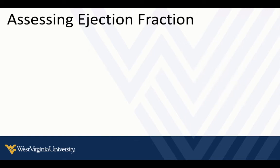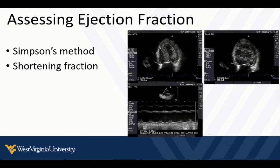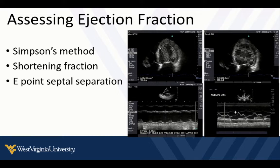Assessing ejection fraction is the common thing we want to think about. I'll briefly cover these methods so you know about them. Simpson's method is what they use most commonly in the echo lab — they get apical views and essentially calculate the area from diastole to systole to assess ejection fraction. The shortening fraction looks at the diameter from systole to diastole and does the math. The one talked about most in the point-of-care literature is the E-point septal separation, which is a more mathematical way to look at how much the mitral valve is opening, allowing you to calculate an ejection fraction.